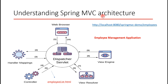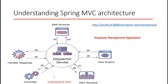Now let's understand Spring MVC architecture and how the HTTP request is processed step by step. Looking at the diagram, the DispatcherServlet is at the center of the Spring MVC architecture. The numbering goes from one to ten — these are the steps involved. All requests from the web browser first come to the DispatcherServlet — that is step one.